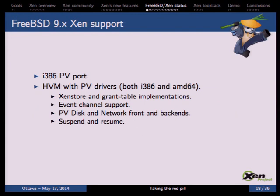On FreeBSD 9, you could run FreeBSD as a PV guest on 32-bit but were limited to only one vCPU — no SMP support — or you could run on Xen as an HVM guest with PV drivers for both 32 and 64 bits. This meant we already had Xen store and grant table implementations, event channel support, PV disk and PV network interfaces, and suspend and resume code in order to migrate guests between different hosts.